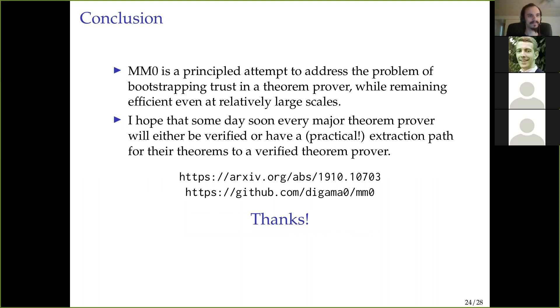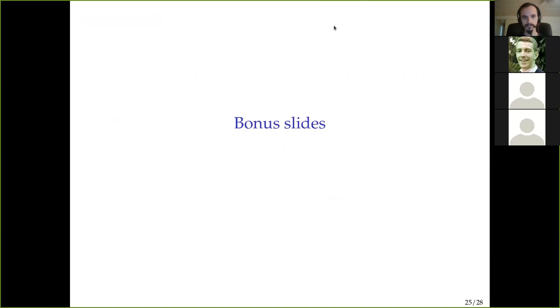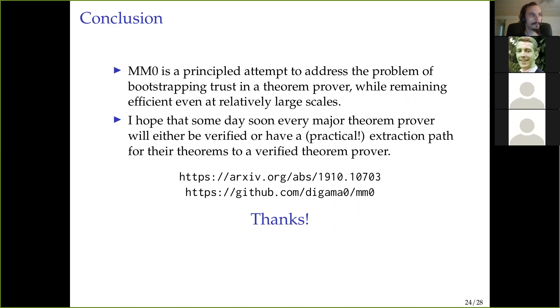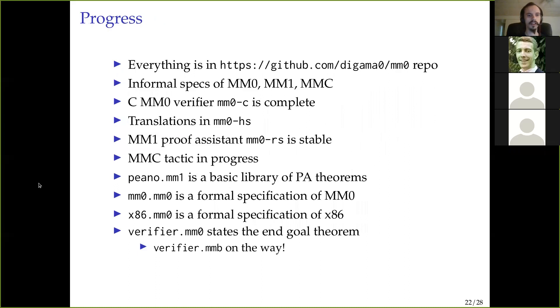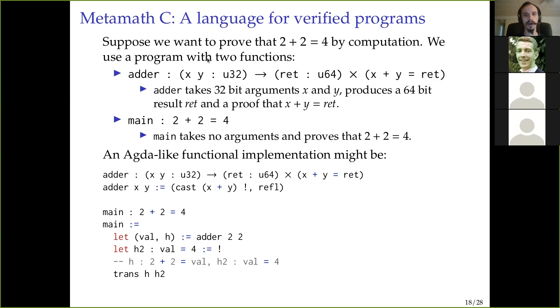So define a formal specification language, write a verifier for that language, prove the correctness of the verifier using the proof assistant in order to help it with constructing the proofs and using the programming language to help with writing the machine code. So in conclusion, MM0 is a principled attempt to address the problem of bootstrapping trust in a theorem prover. And I would like to think that it's pretty good. So thank you very much. And I guess I can take questions.